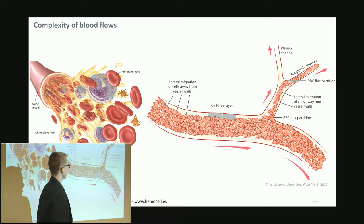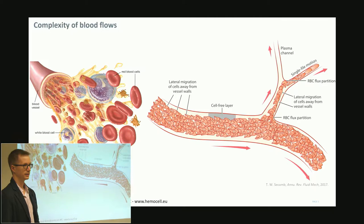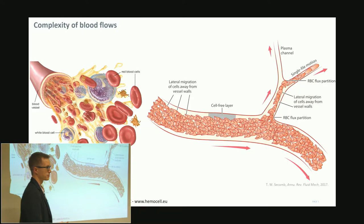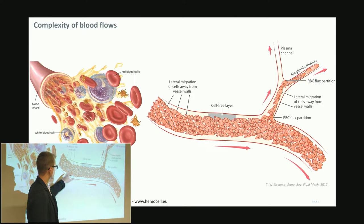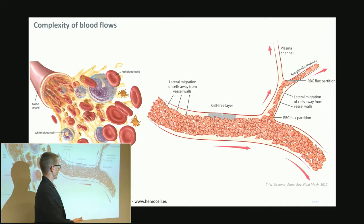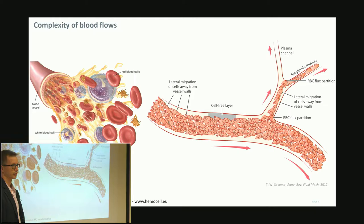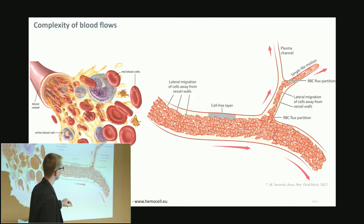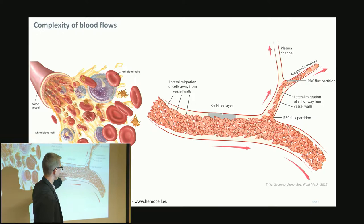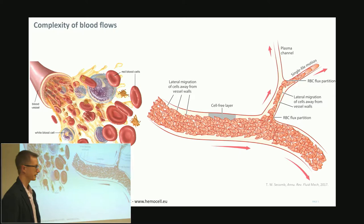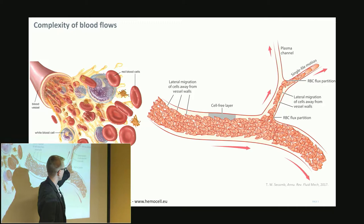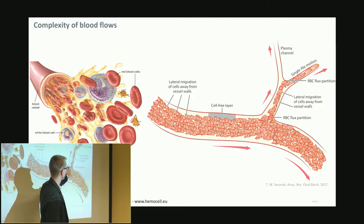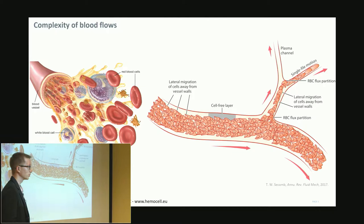If you have done CFD simulations in COMSOL or ANSYS, you know those are already difficult. Adding immersed bodies that can deform and collide adds further complexity. Due to these deformable cells, there are unique phenomena in our vessels: the deformable cells migrate away from the wall, leaving a lubrication layer of plasma next to the vessel wall. As a side effect, at branching points, the hematocrit in the side branch is lower than in the main branch because more plasma is close to the wall.